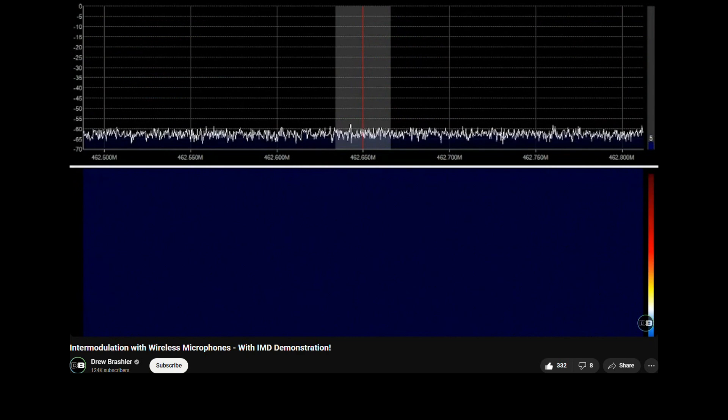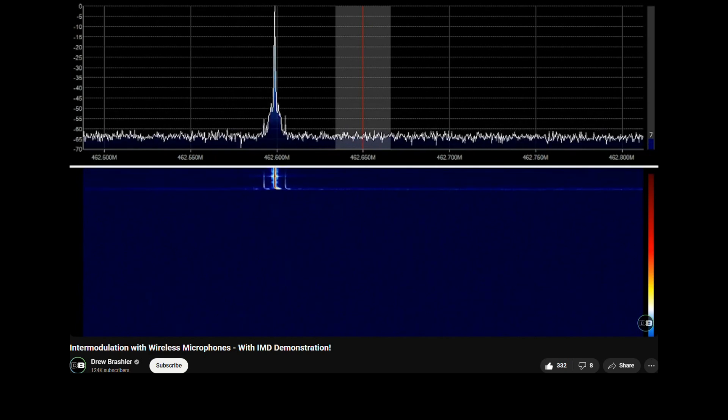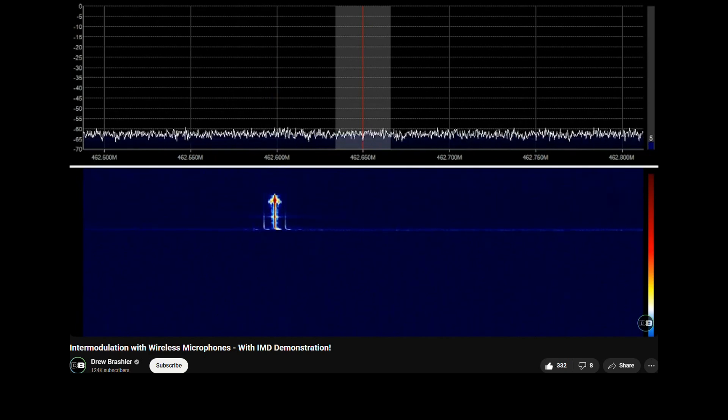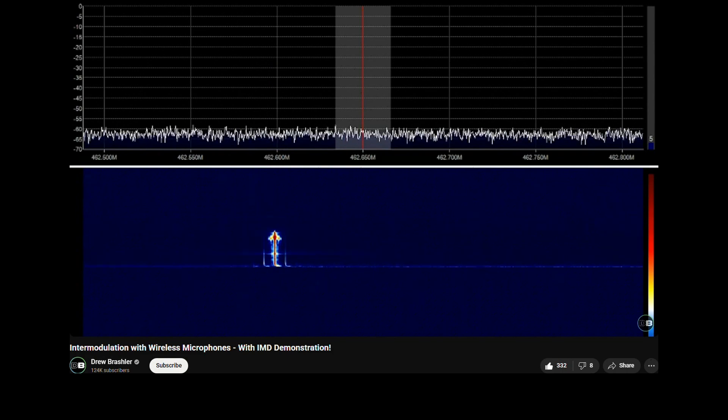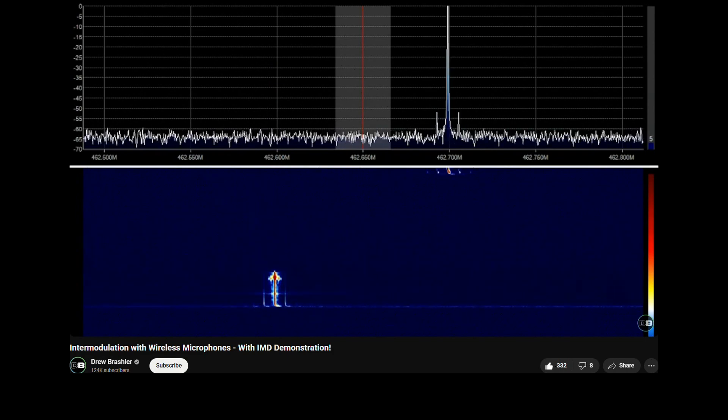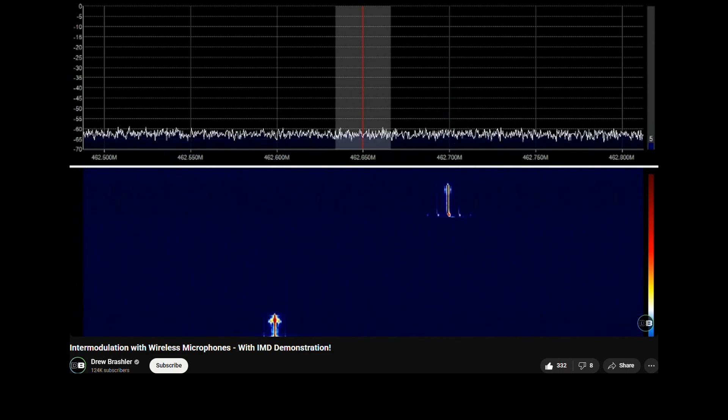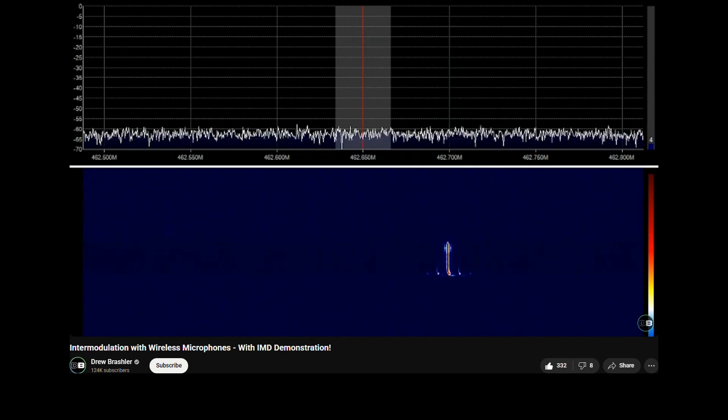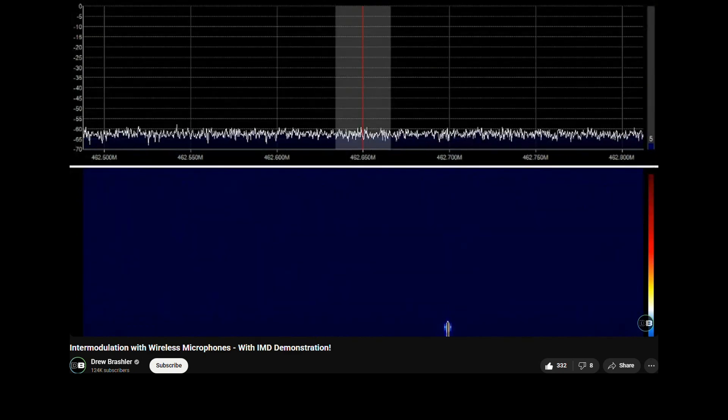All right, so let's actually show you the intermod distortion happening here. So we have our frequency one, which is 462.600, there you go. And we also have our frequency two, which is 462.700, there it is. And now when we take both of these and combine them, we'll see that we'll have our intermod distortion products happening above and below the frequencies.